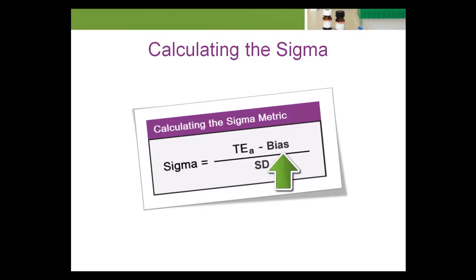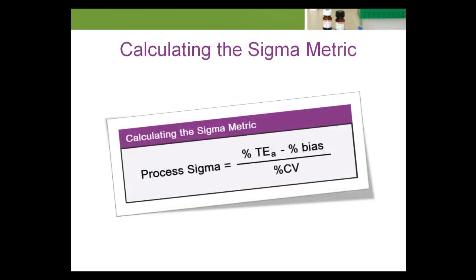Bias is the systematic difference between the expected results obtained by the laboratory's test method and the results that would be obtained from an accepted reference. The reference may be another test method, a standard, or a consensus reference like a proficiency program or an interlaboratory peer comparison program. SD is the total analytical standard deviation of the test method. Equivalently, the quantities can be given as percents: sigma equals percent TEA minus percent bias divided by percent CV, where percent CV is the analytical coefficient of variation of the test method.